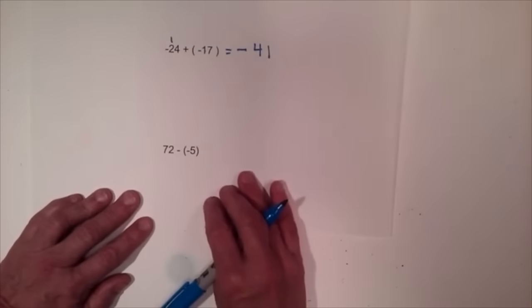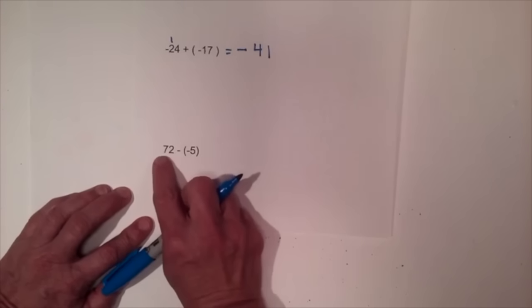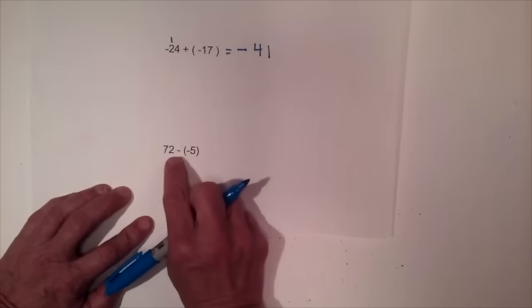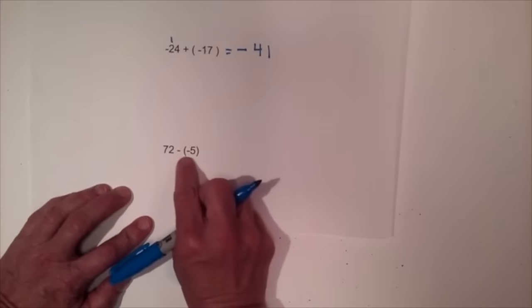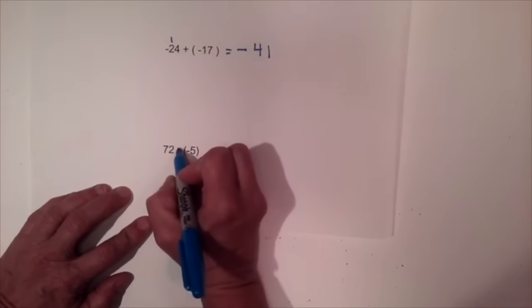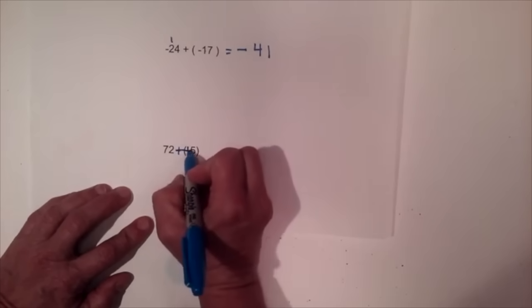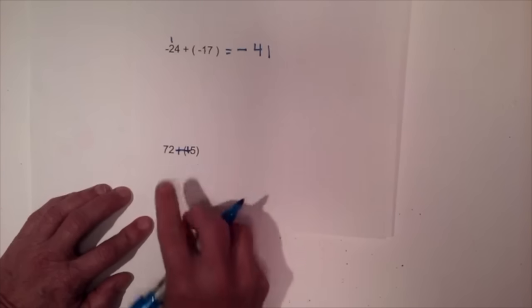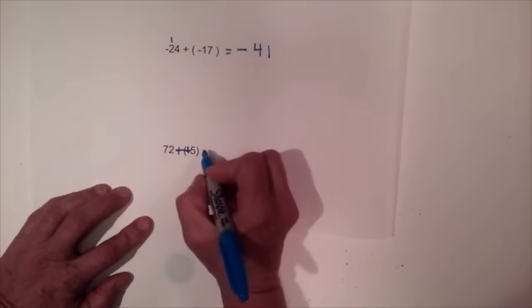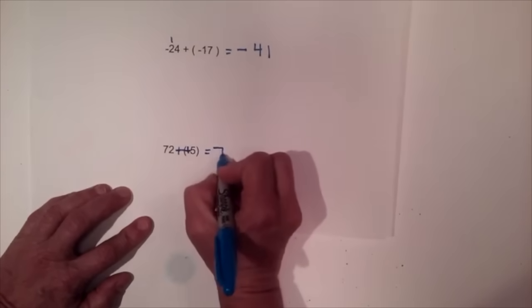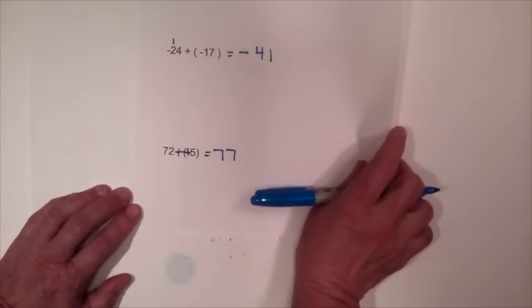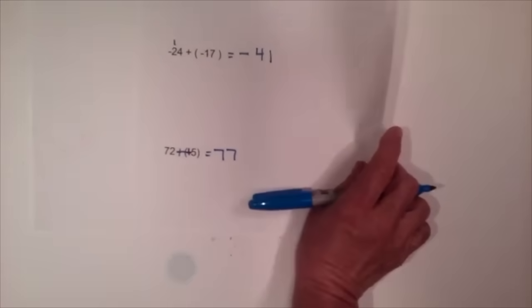Now let's look at subtraction. We have seventy-two minus a negative five. When you have a double negative, you can make those into a positive because two negatives make a positive. So now we're going to add those together and we get seventy-seven.